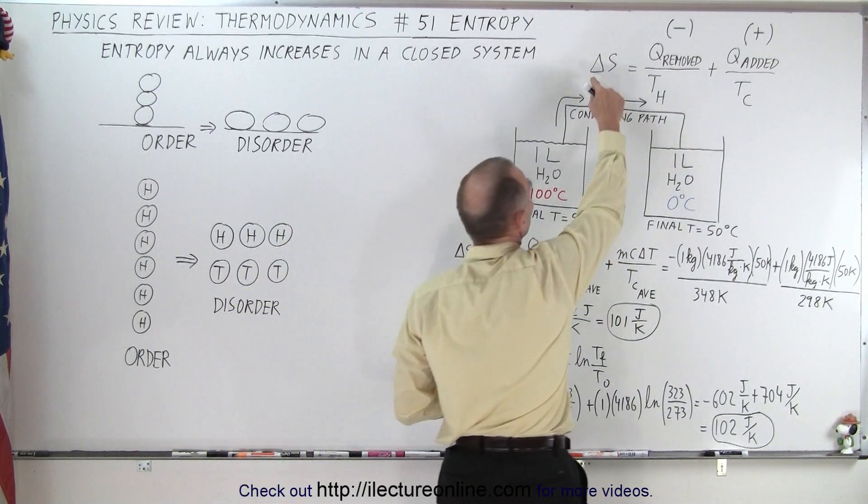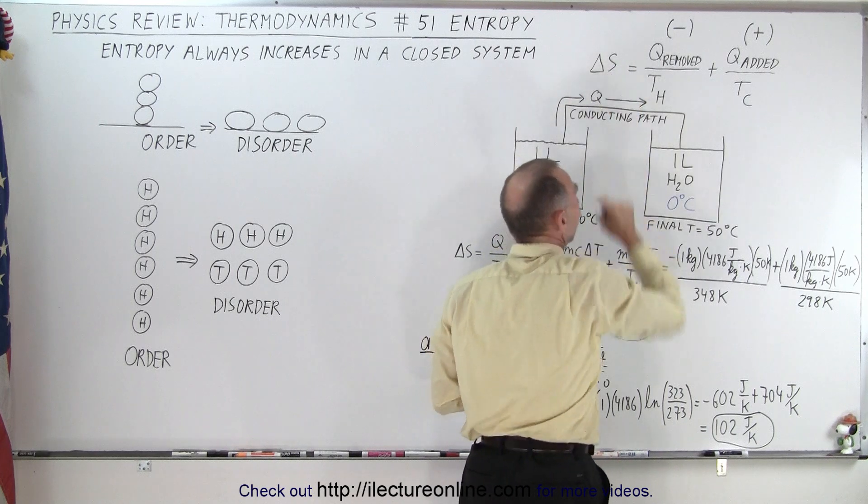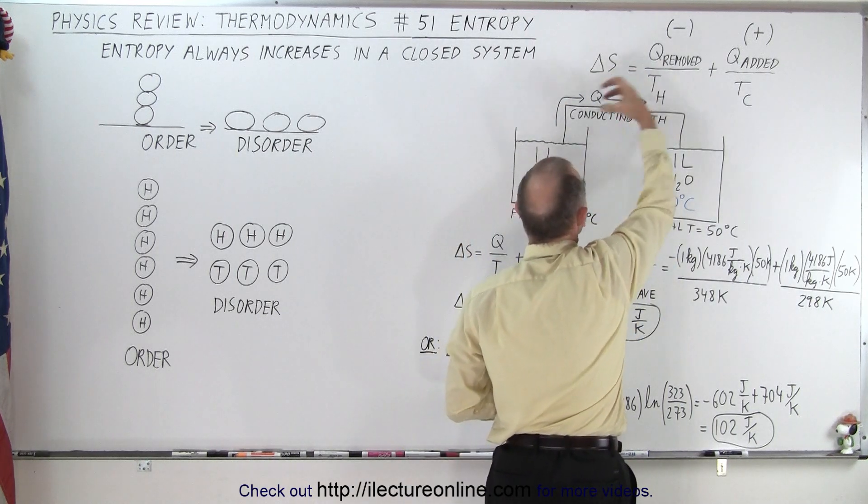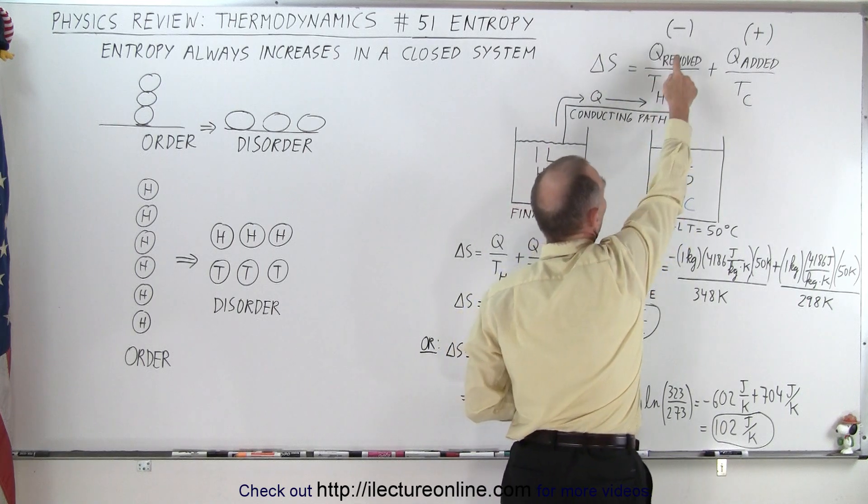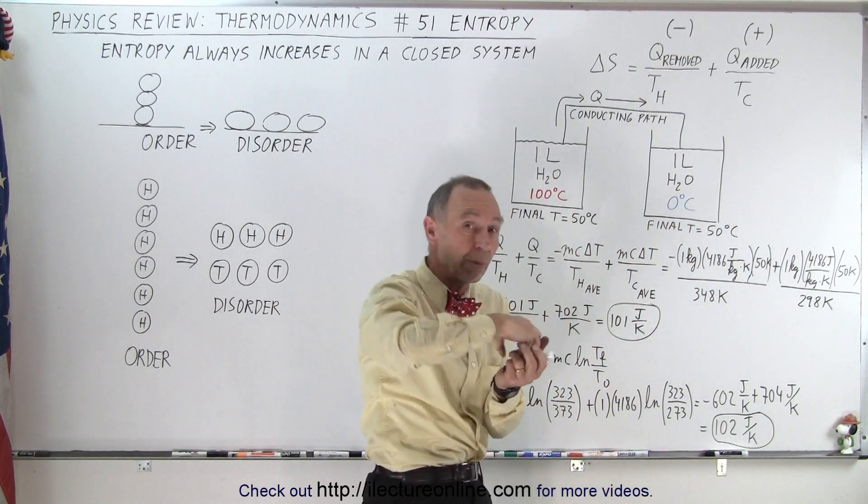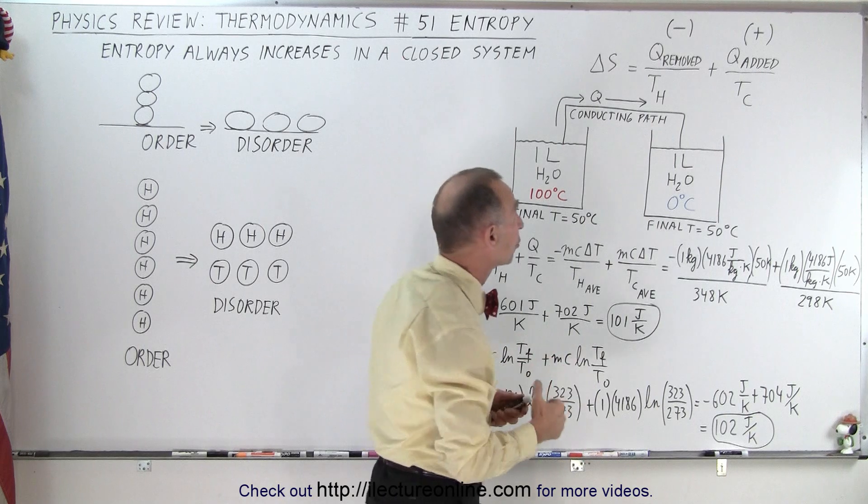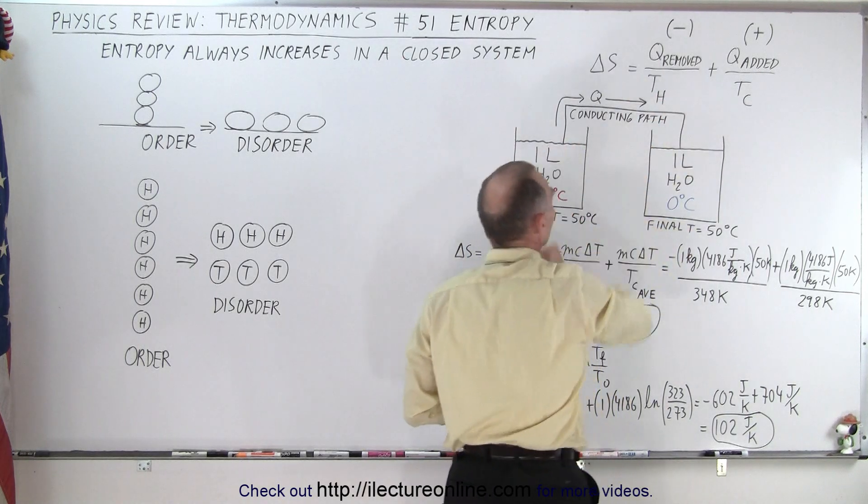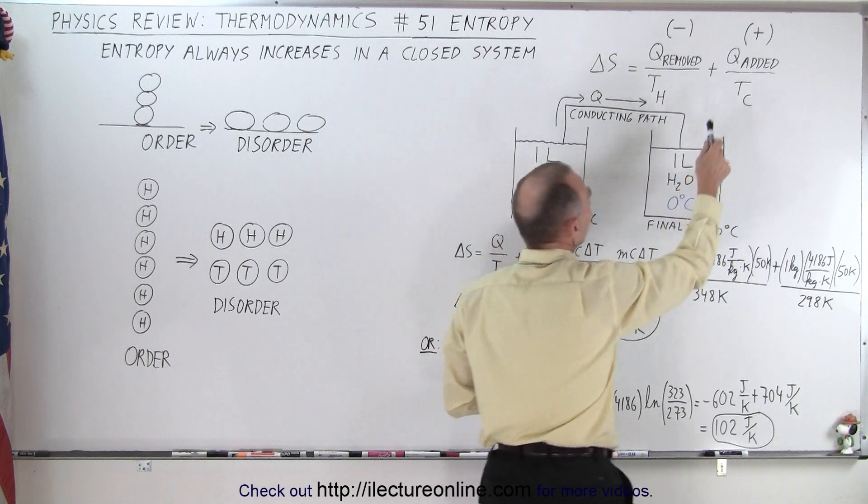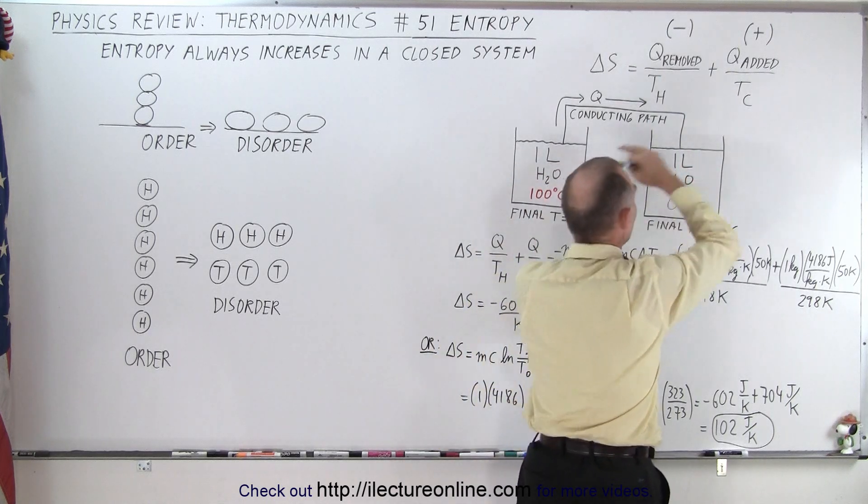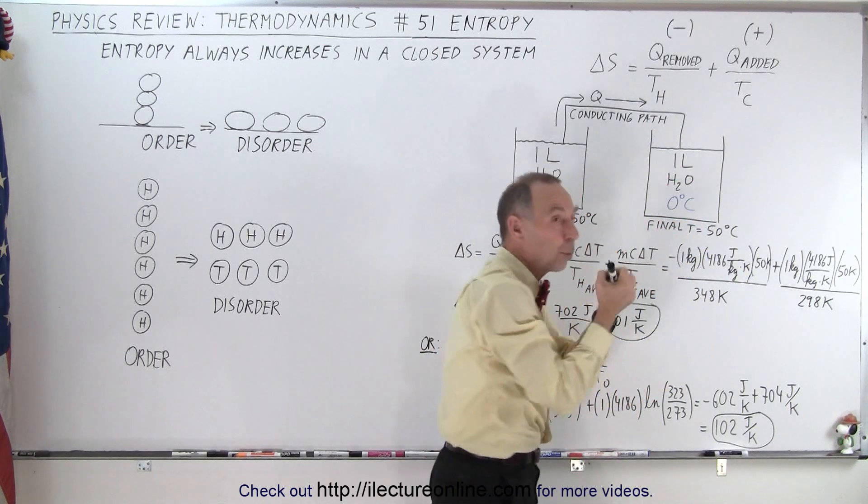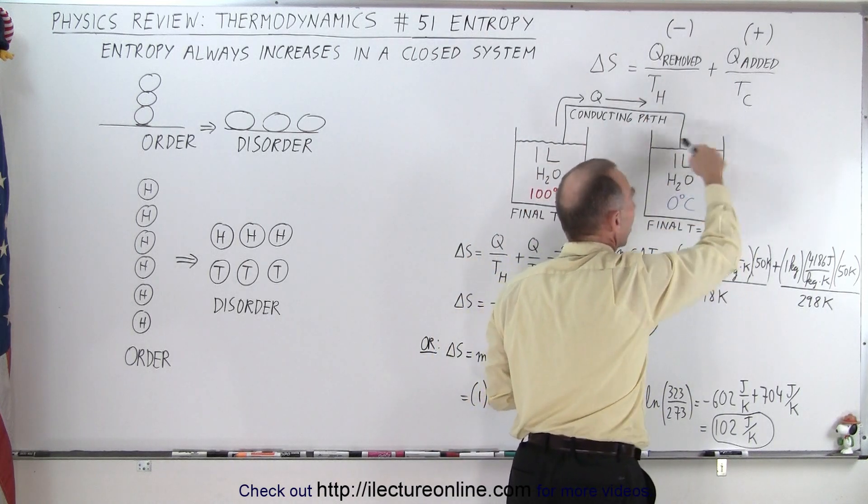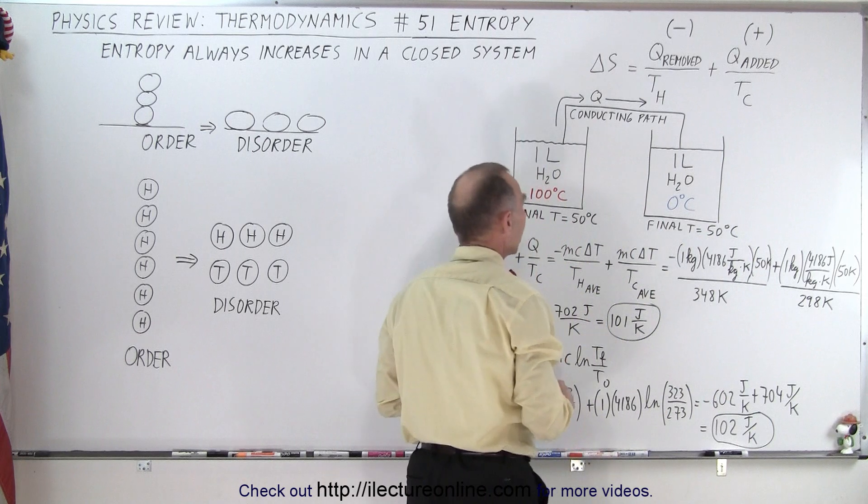The equation to calculate the change in entropy, and yes, we use the letter S for entropy, is to take all the heat that was removed from a hot reservoir. That will be negative because when we remove heat, that's a negative heat change. Divide that by the average temperature of the hot reservoir. We add that to the same heat that's now added to the cold reservoir. It's the same quantity, but now it's a positive value over the average temperature of the cold reservoir.